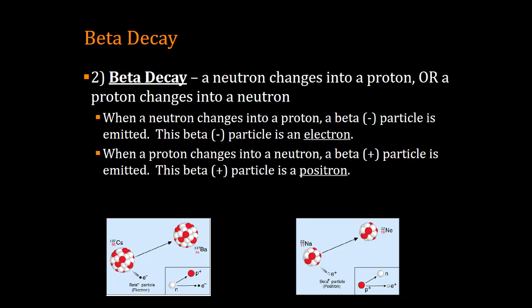Beta decay is different than alpha decay because it doesn't actually involve just the emission of one nucleus, of a helium nucleus. It actually involves a change within the nucleus.